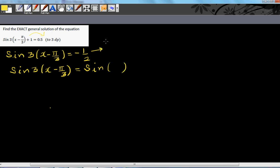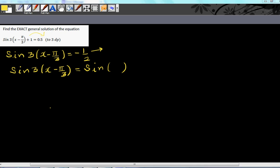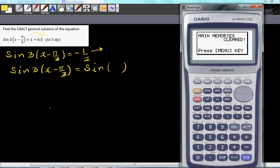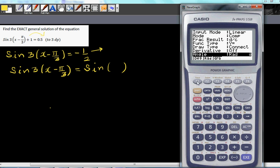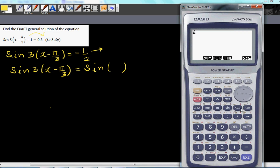Now if you take sine inverse of negative half, let me use my calculator. First, let me change this into degrees. Let me go to run menu and change this into degrees. I'll go shift sine of negative half, negative 0.5. That is how many degrees? This is minus 30.